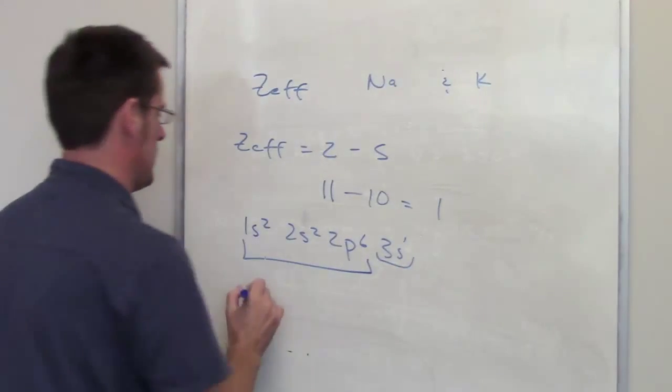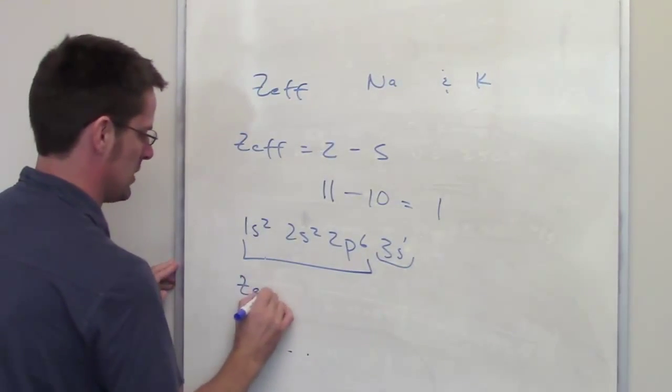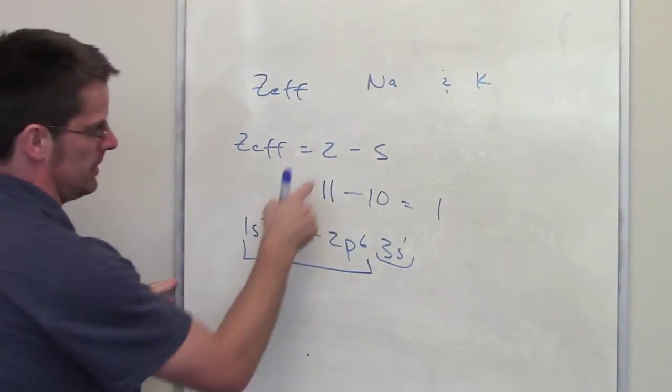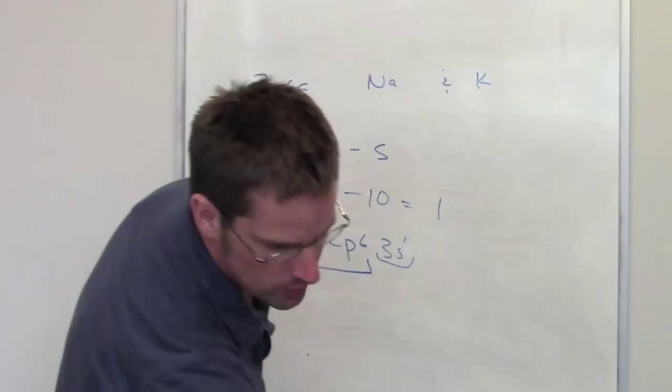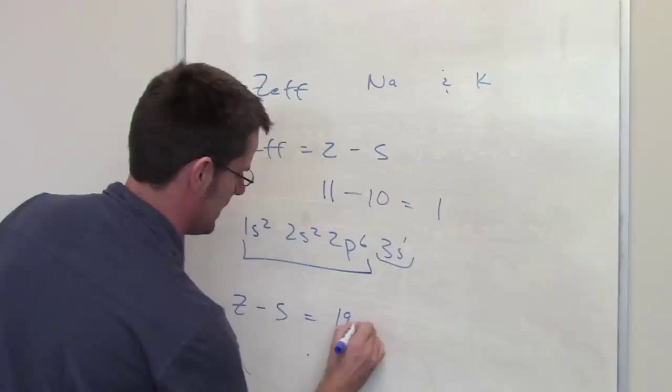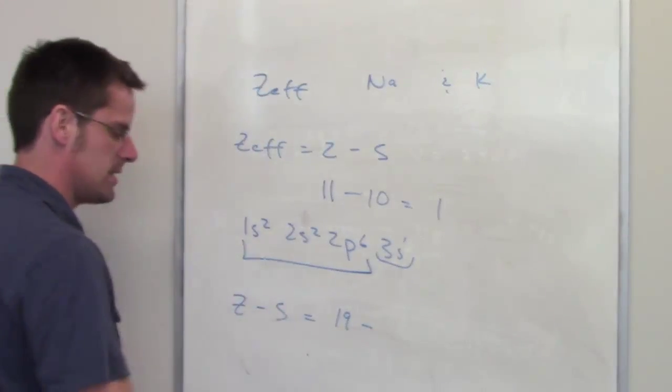Let's compare that with the Z-effective felt by the outermost electron in potassium. For potassium, potassium's atomic number Z is 19. So Z minus S for potassium is equal to 19 minus...